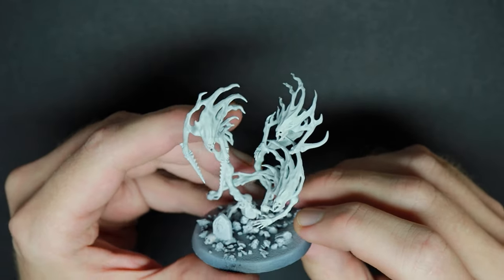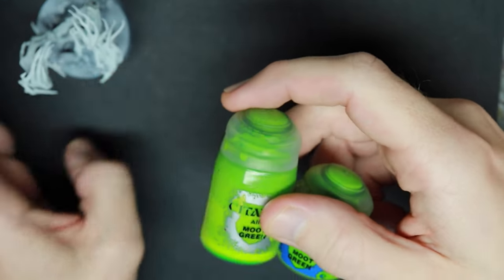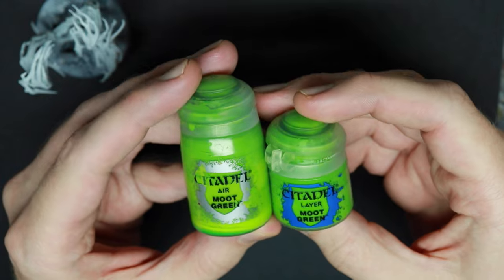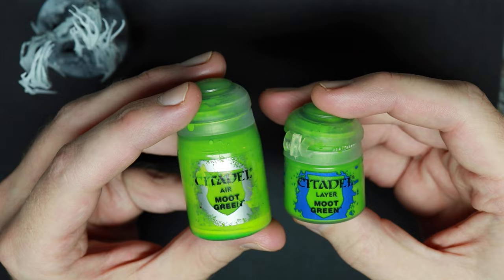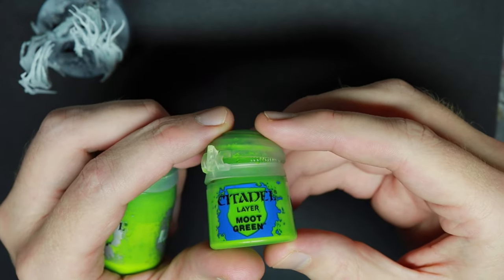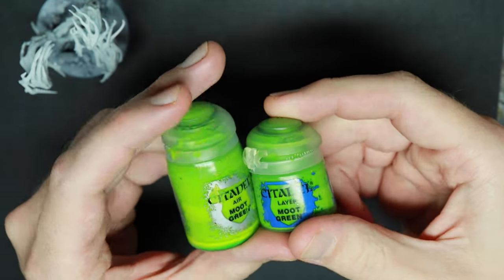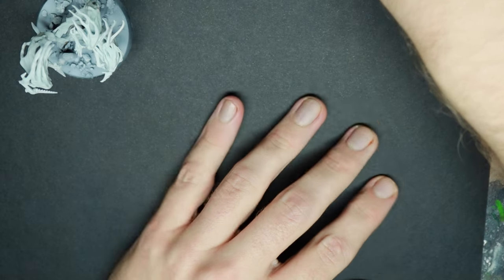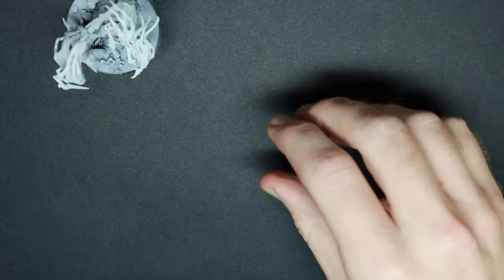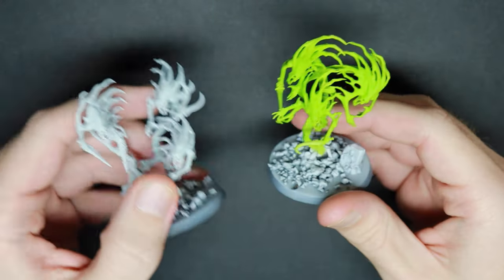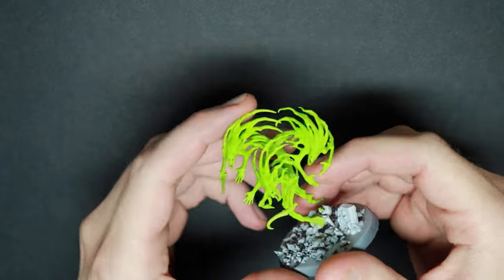So the first thing we will be doing is giving them a coat of Moot Green. I have two different variants here. I have the airbrush version, the ones I will be using or have used, and the normal Citadel layering paint. You can use either. The color is the same and the result will be more or less the same. And with the help of a little movie magic, I have already painted one. Because this process is not very interesting. It's just putting green on top of the primer.